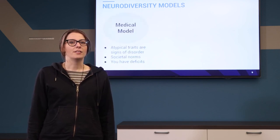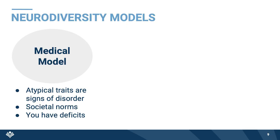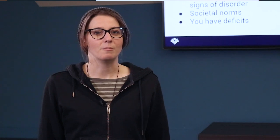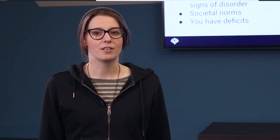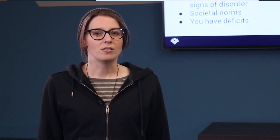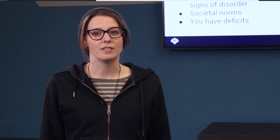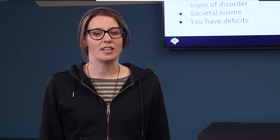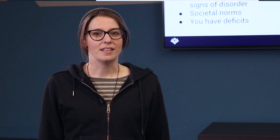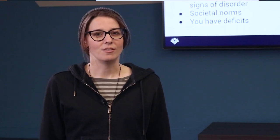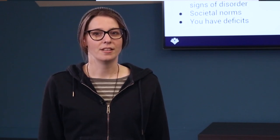Under the medical model, there are neurotypical people and there are neurodivergent people. You are either typical or you somehow diverge from what is typical because you are disordered. Neurodivergent people are those who have neurodevelopmental disorders like autism spectrum disorders, ADHD, OCD, giftedness, Tourette's syndrome, dyslexia, or others. Neurotypical people are everyone else. Under this model, neurodiversity is characterized in terms of deficits.